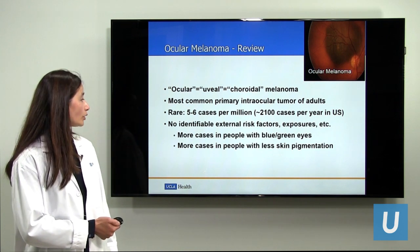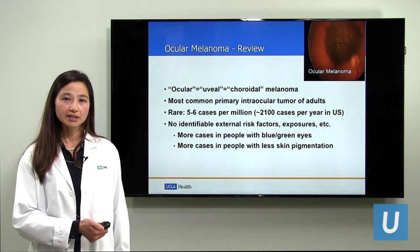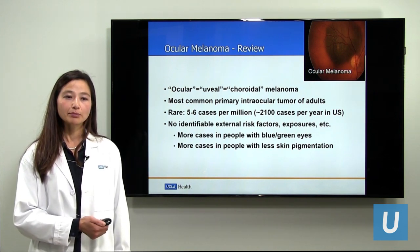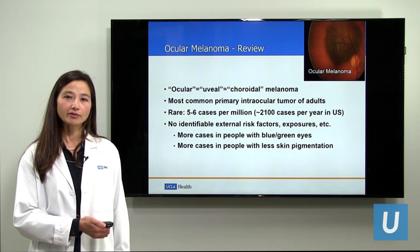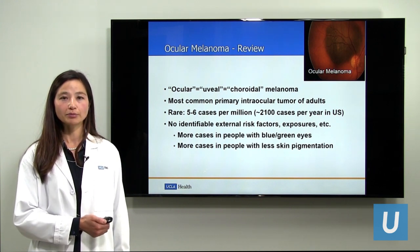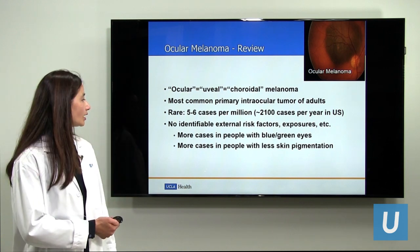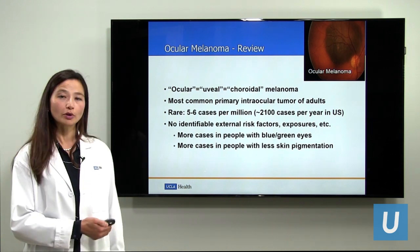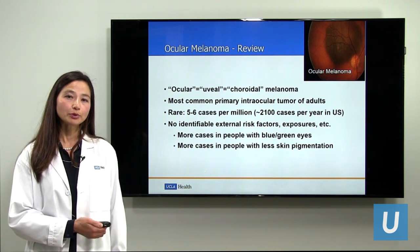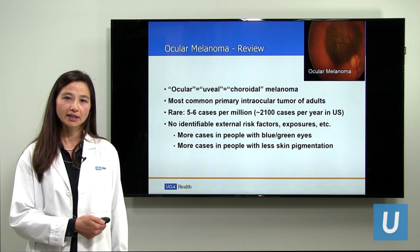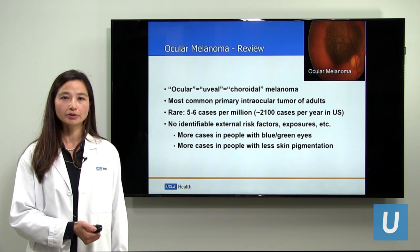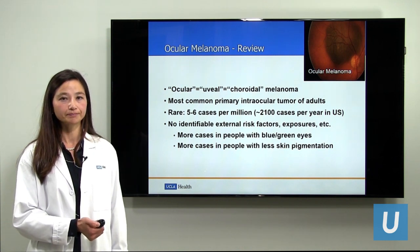We do know from epidemiologic studies that people with blue or green eyes tend to develop ocular melanoma more than people with darkly colored eyes. We also know that people with less pigmentation of their skin seem more prone to developing ocular melanoma.